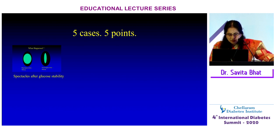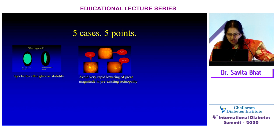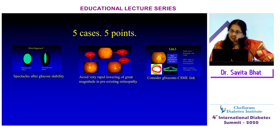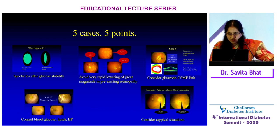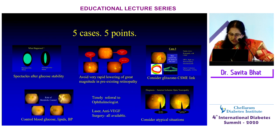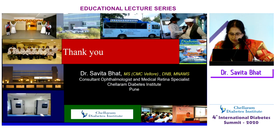In conclusion, five cases and five key points: Case one — hyperglycemia causes osmotic lens changes and blurred vision. Case two — avoid rapid lowering of sugars in pre-existing retinopathy. Case three — glitazones worsen pre-existing diabetic macular edema and should be stopped. Case four — metabolic control of blood glucose, lipids, and blood pressure are all equally important. Case five — it is not just diabetic retinopathy; other lesions like anterior ischemic optic neuropathy can occur in diabetics, so timely referral to an ophthalmologist is essential. In our armamentarium: lasers, anti-VEGF, surgery, and close follow-up are all important.